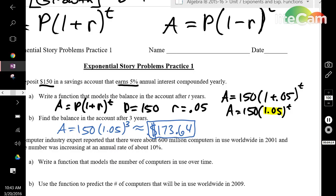Does this answer make sense? I had exponential growth, which means my money amount should be larger than when I started. 173.64 is larger than 150, so therefore this answer does make sense.